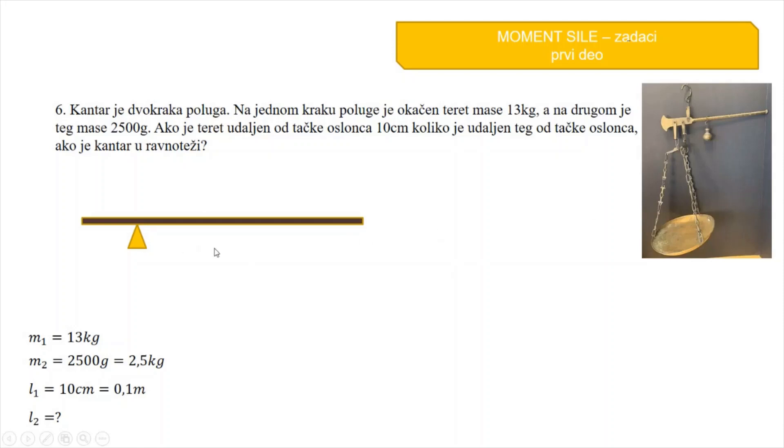Kantar je dvokraka poluga. Na jednoj strani je teret, a na drugoj je teg. Teret je udaljen L1, a teg je udaljen L2. Teret će praviti moment M1, a teg će praviti moment M2. Ovaj kantar, odnosno poluga, će biti uravnoteži onda kada je M1 jednako M2. Ali, da bi smo to uopšte dobili, mi moramo prvo da izračunamo kolike su težine tereta.